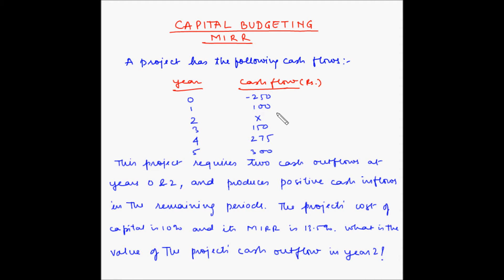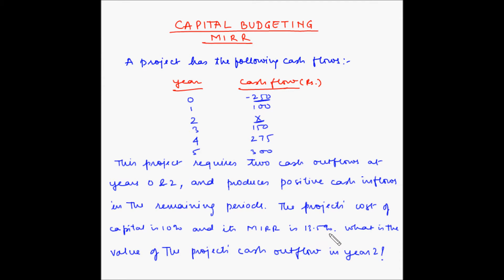Let us look at another example of Modified Internal Rate of Return, or MIRR in short. A project has the following cash flows for years zero through five. The project requires two cash outflows at years zero and two, and produces positive cash inflows in the remaining periods. The project's cost of capital is 10 percent and its MIRR is 13.5 percent.